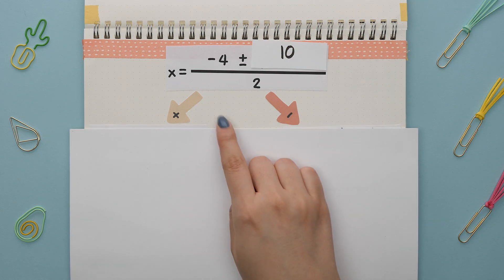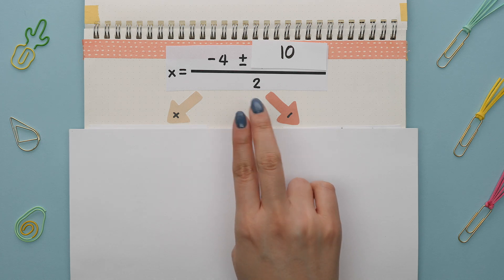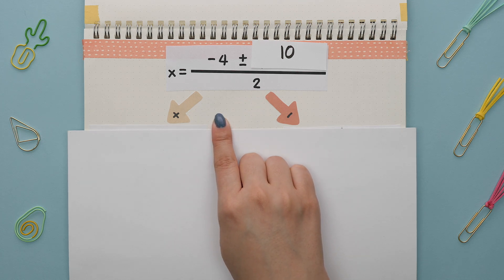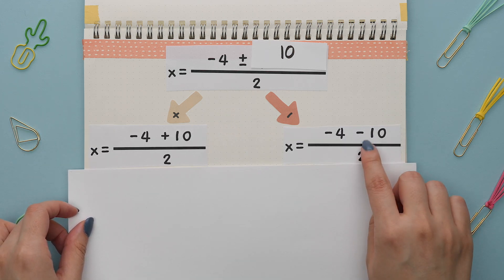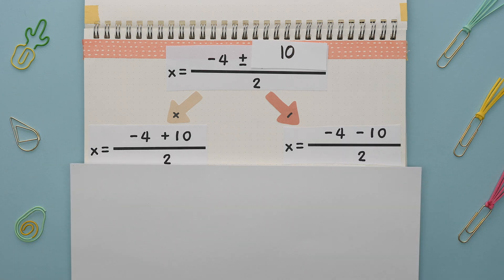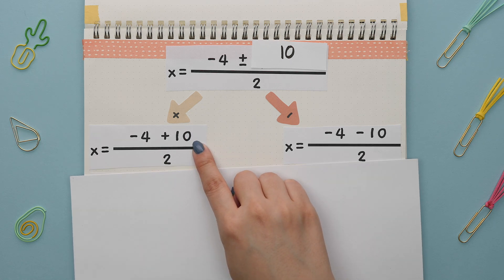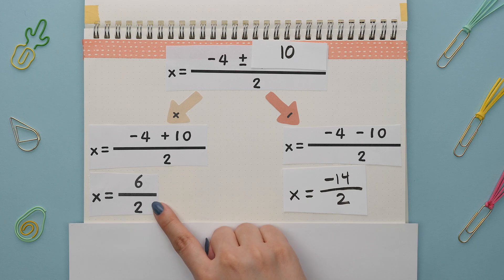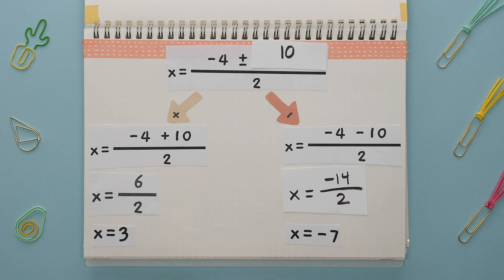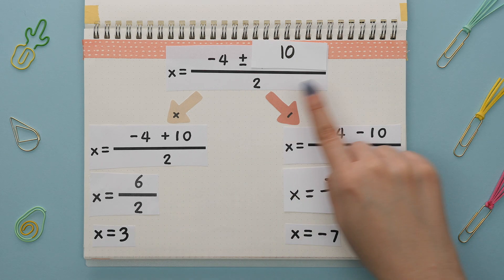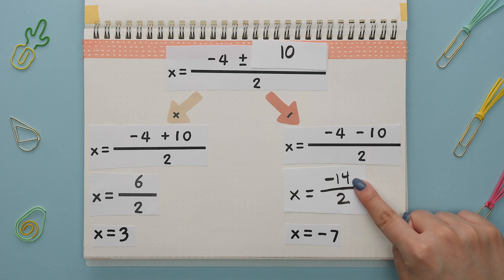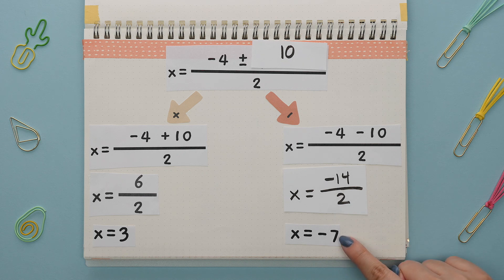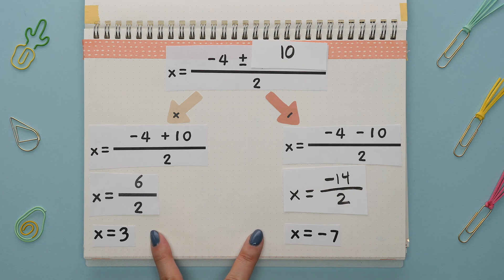Now we need to separate this into two separate fractions, because you will actually get two x values when using the quadratic formula. One fraction will have the plus sign, while the other will have the minus sign. Negative 4 plus 10 is 6, and 6 divided by 2 is 3 — that is our first x value. Negative 4 minus 10 is negative 14, and negative 14 divided by 2 is negative 7. These are both of our x values.